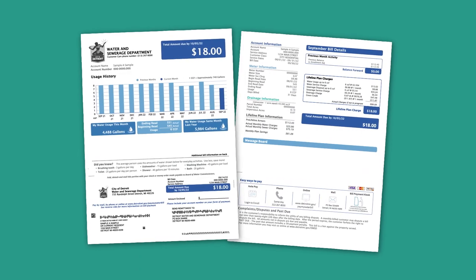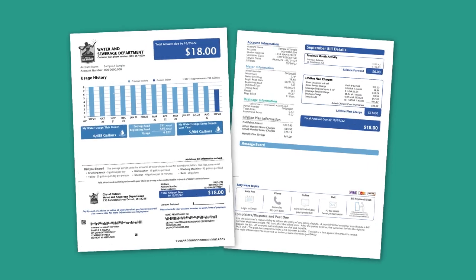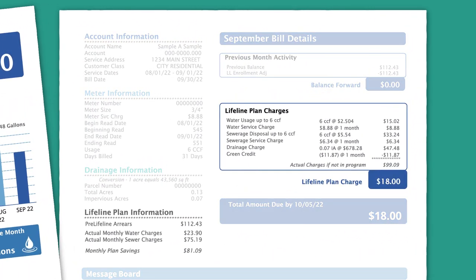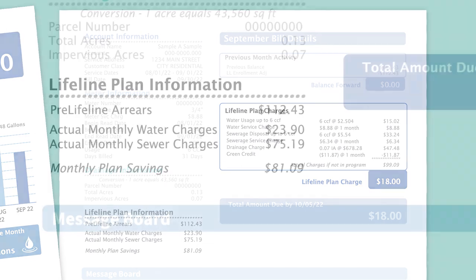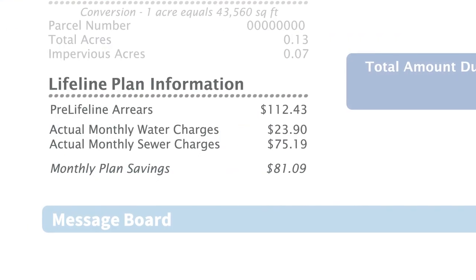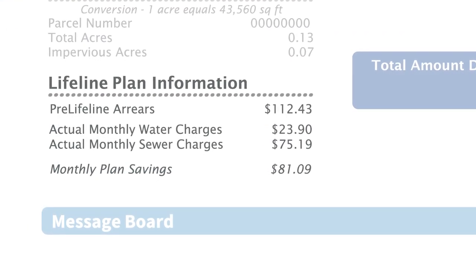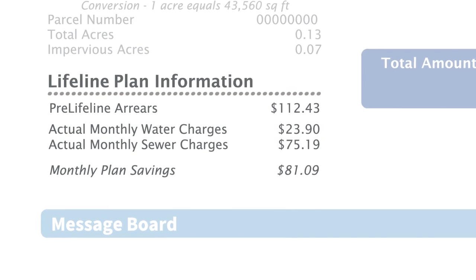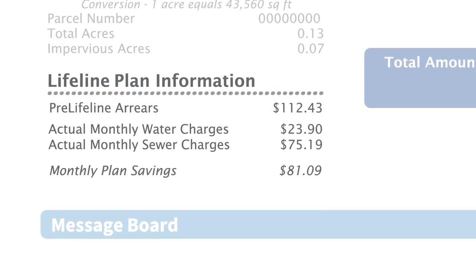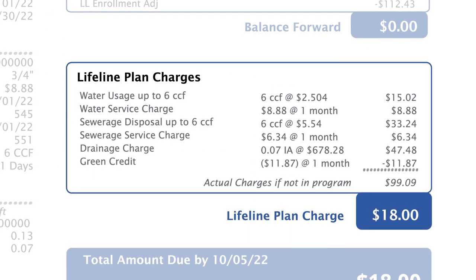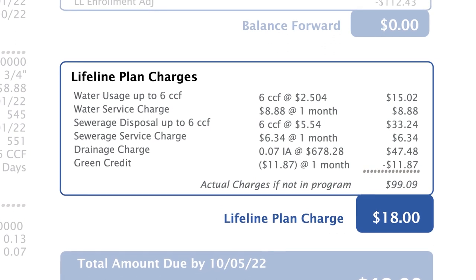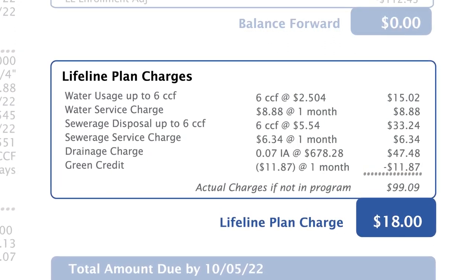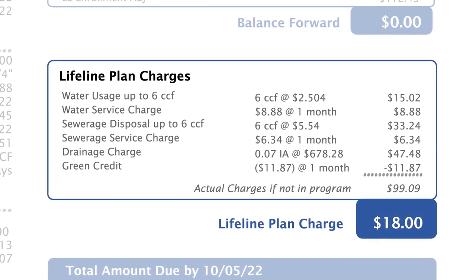If you are enrolled in DWSD's Lifeline Plan, your bill will have additional information on the second page. Under Lifeline Plan Information, you will see your monthly water and sewer charges along with your monthly plan savings. Under Lifeline Plan Charges, you will see a breakdown of your bill with your Lifeline Plan charge based on your income tier level underneath.